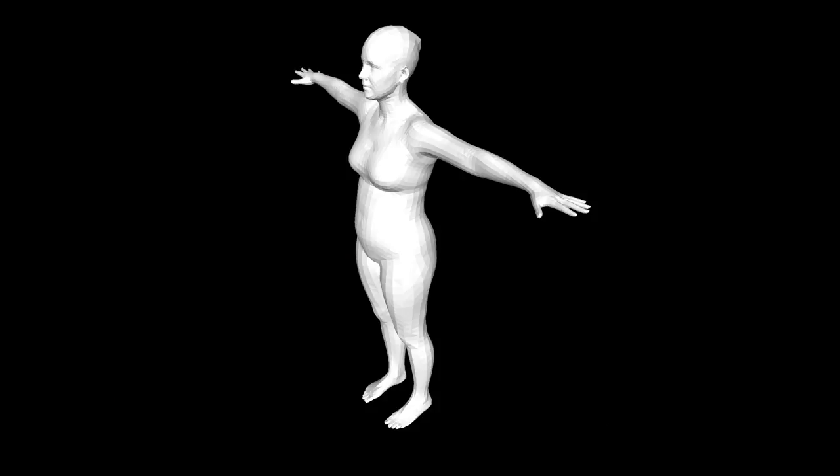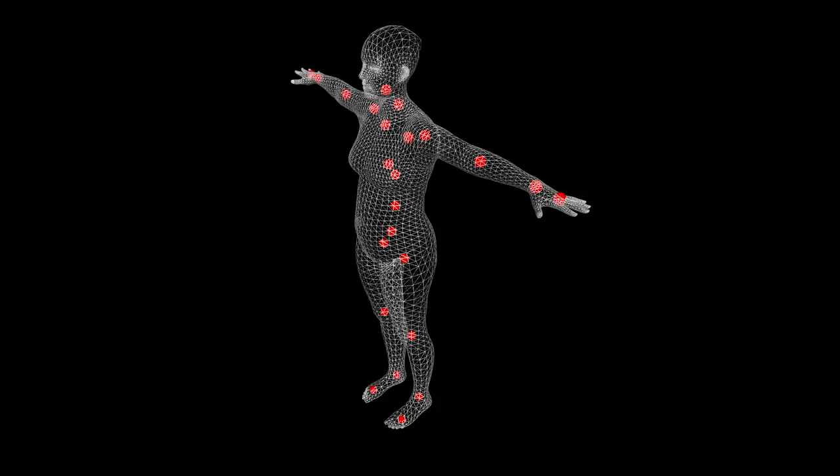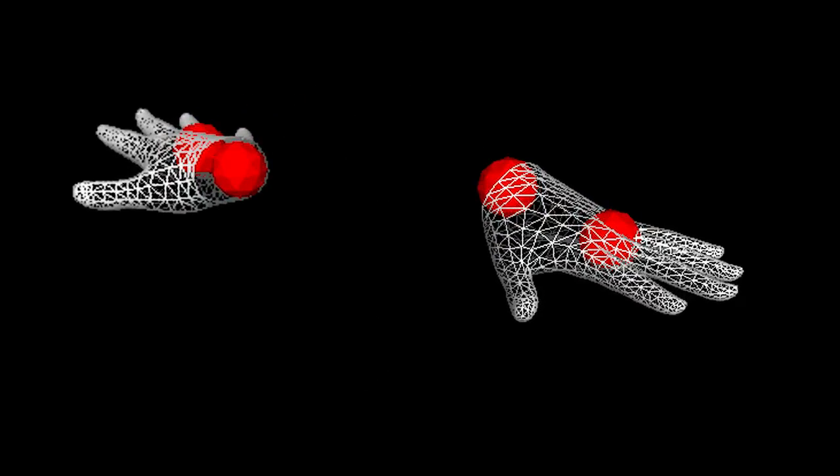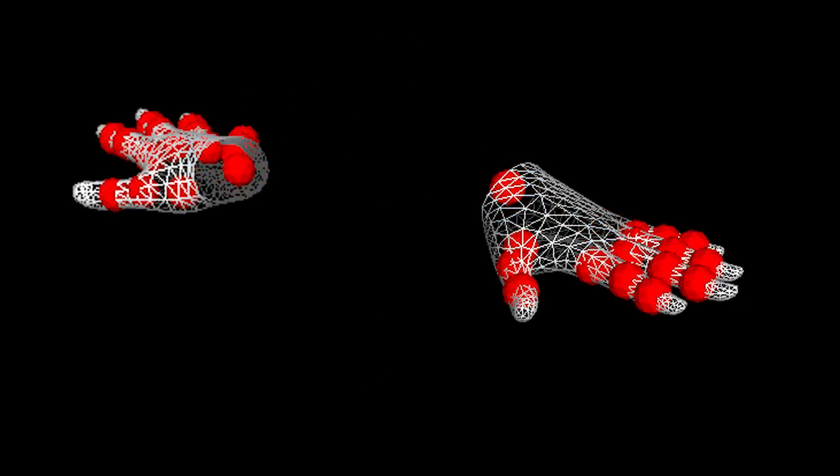We start with an artist-designed hand mesh that is rigged with a skeleton and blend weights for linear blend skinning. We learn a template shape, hand shape variation, and pose-dependent corrective blend shapes from scans.